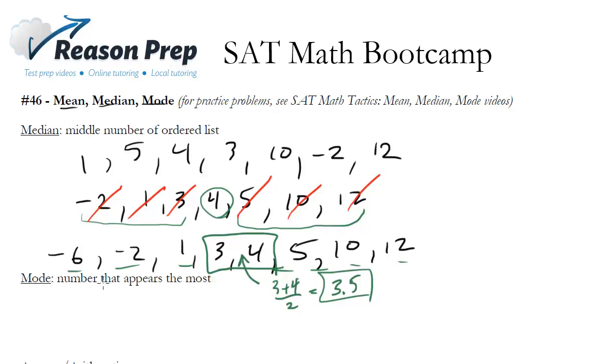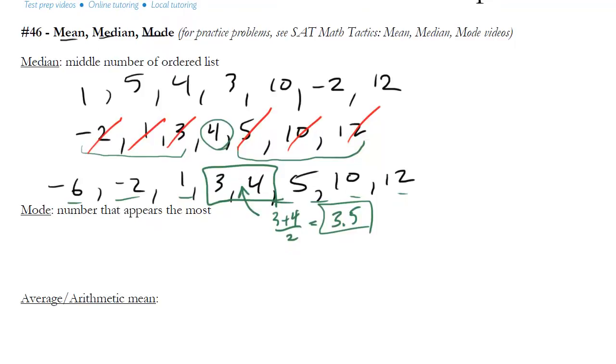The mode is pretty straightforward. It's just the number in a list that appears the most. So if I gave you the following list: 2, 7, 8, 7, 3, 4, 7. What is the mode? The number 7 appears the most often in this list, so the mode would be 7.